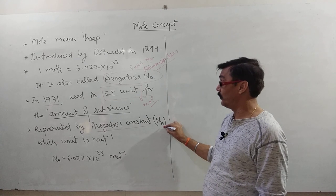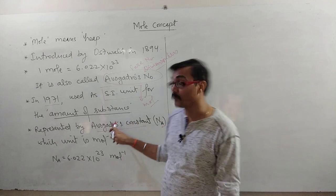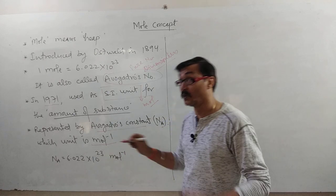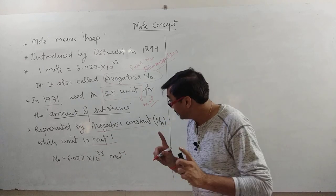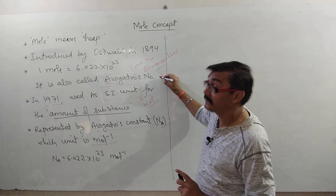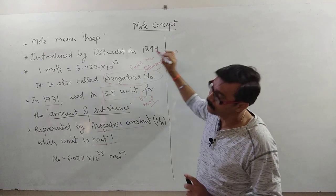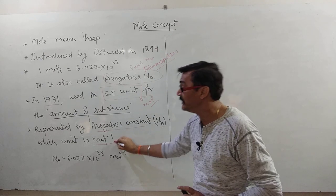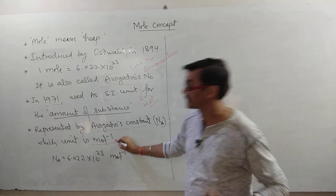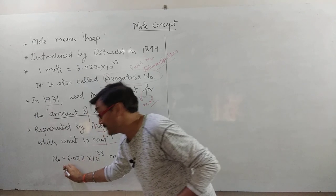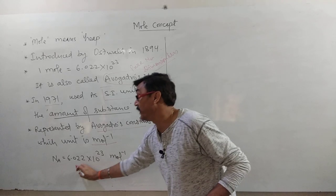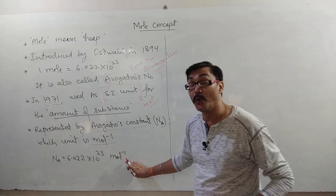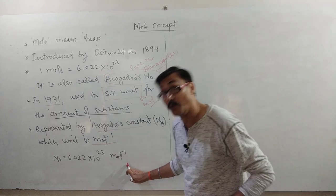Avogadro's constant is denoted NA, where A stands for Avogadro, and its unit is mole inverse. So note the distinction: Avogadro's number is dimensionless — a pure number — but Avogadro's constant has the unit mole inverse. NA is equal to 6.022 into 10 to the power 23 mole inverse, or per mole.